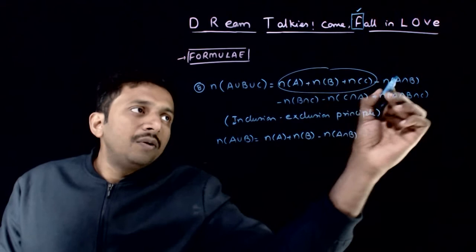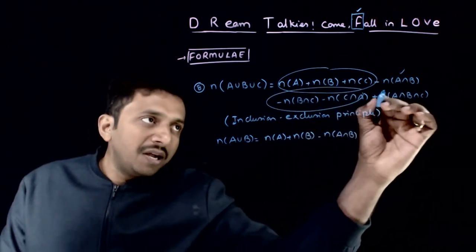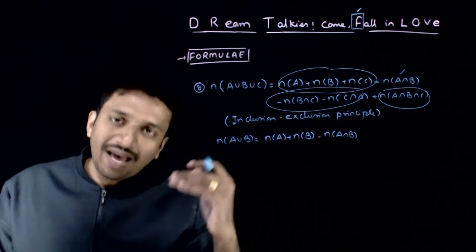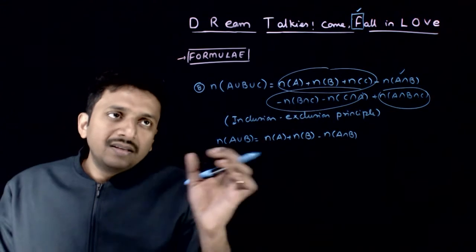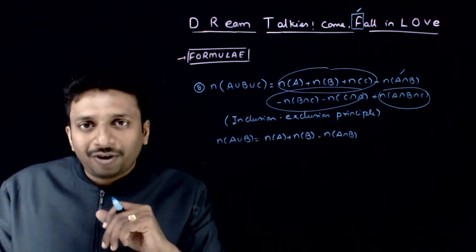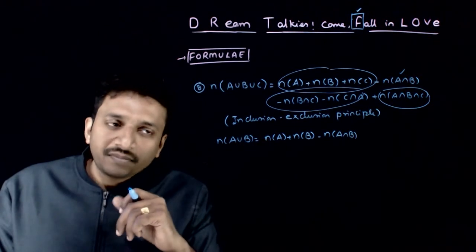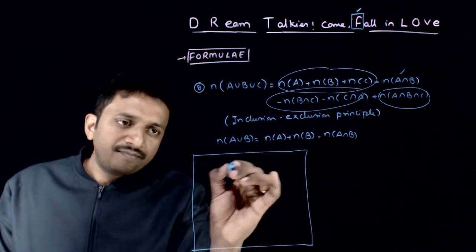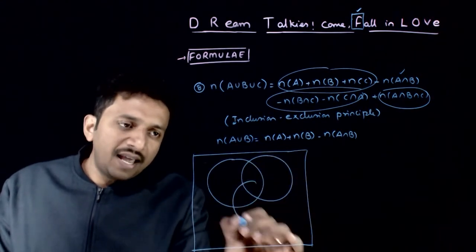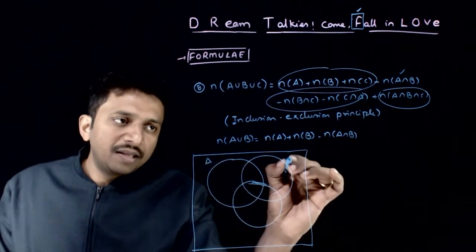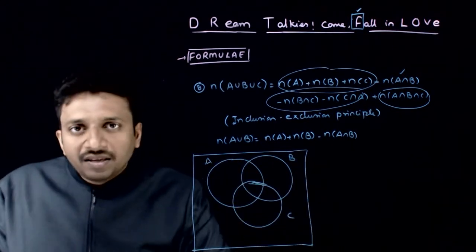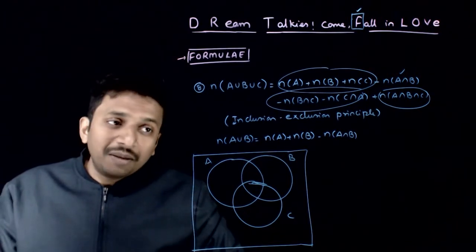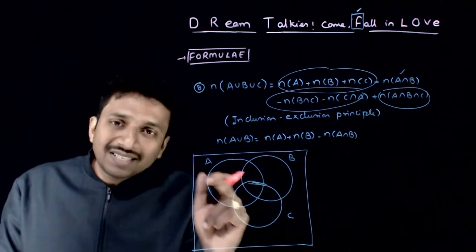You include these sets, you exclude the intersections, then include the next intersections. If there are more than three sets, you exclude the next intersection, and so on. To see why this formula works, take the Venn diagram with sets A, B, and C. The universal set is divided by A, B, and C into different parts.